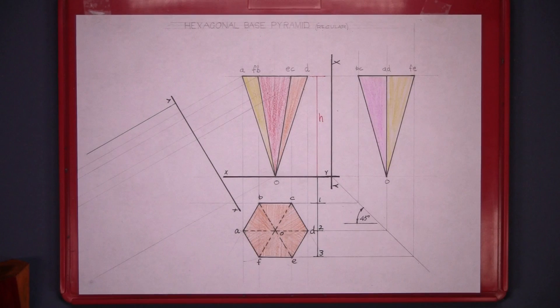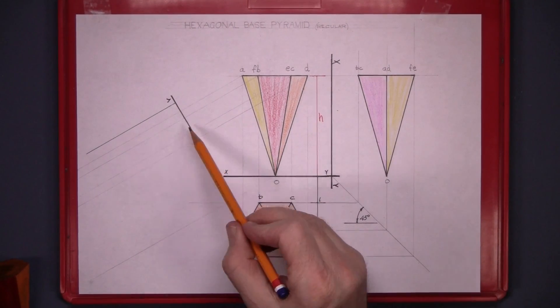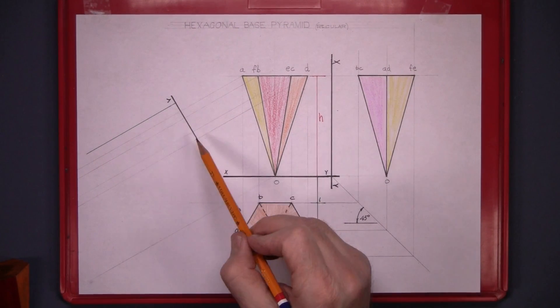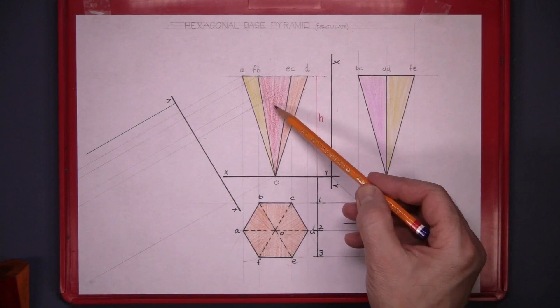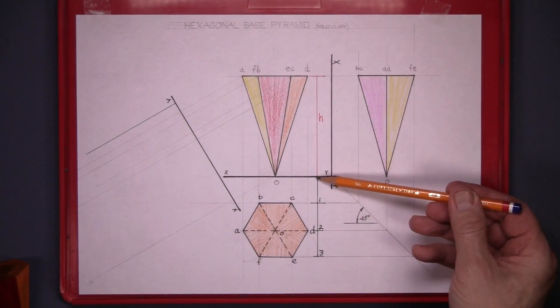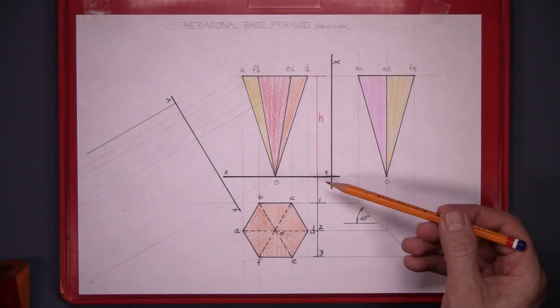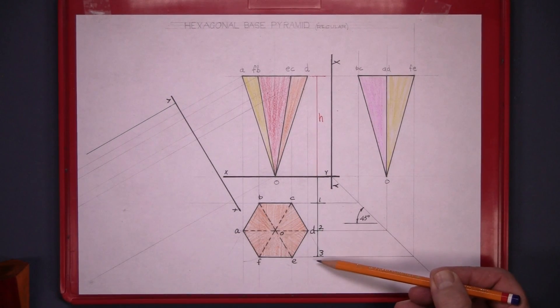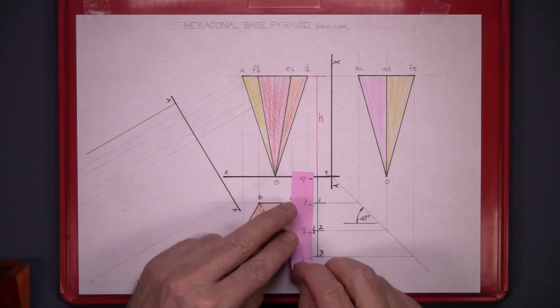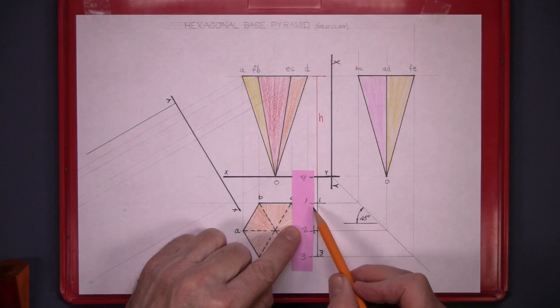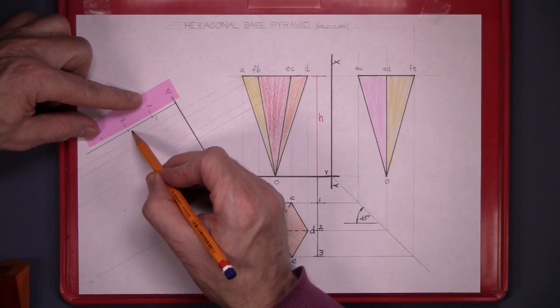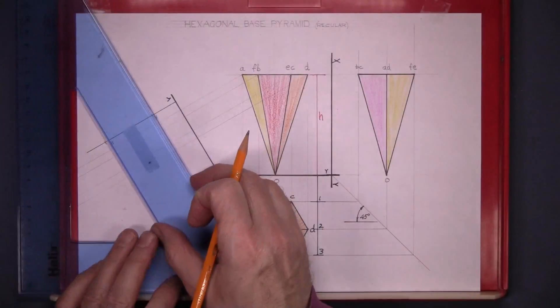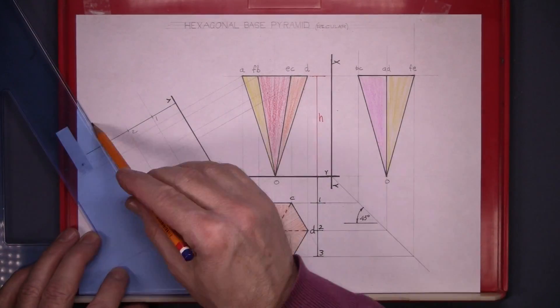Now we're given this XY line at 60 degrees. So project down at 30 degrees from the points in the elevation. And the distances we take are the distances down here. So mark the piece of paper as usual. And taking the piece of paper to the new view, step off 1, 2, and 3. And draw those lines then parallel with your XY line.